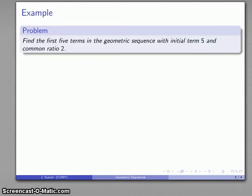For example, find the first five terms in the geometric sequence of the initial term 5 and common ratio 2. So here's where my starting term is 5, the very first term of the sequence is 5, and every term is going to be 2 times the preceding term.